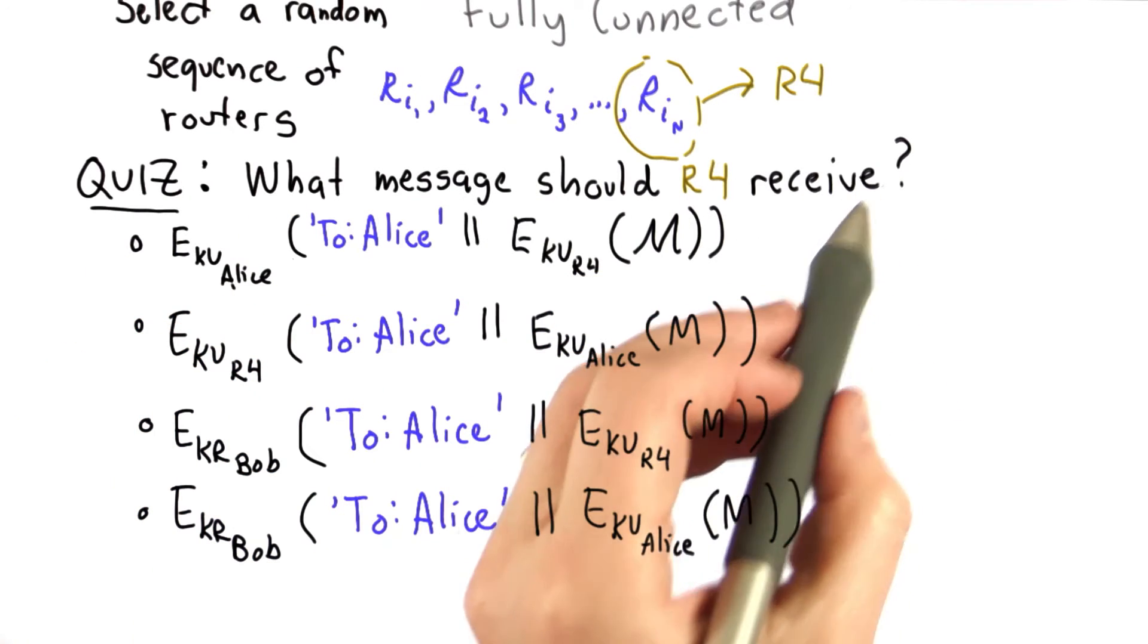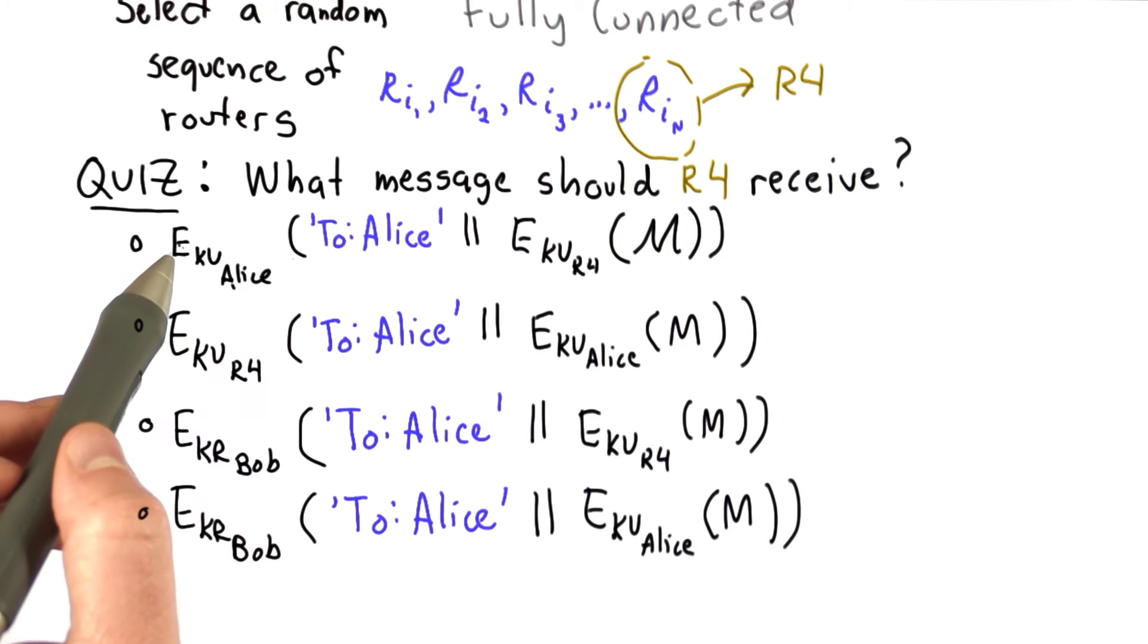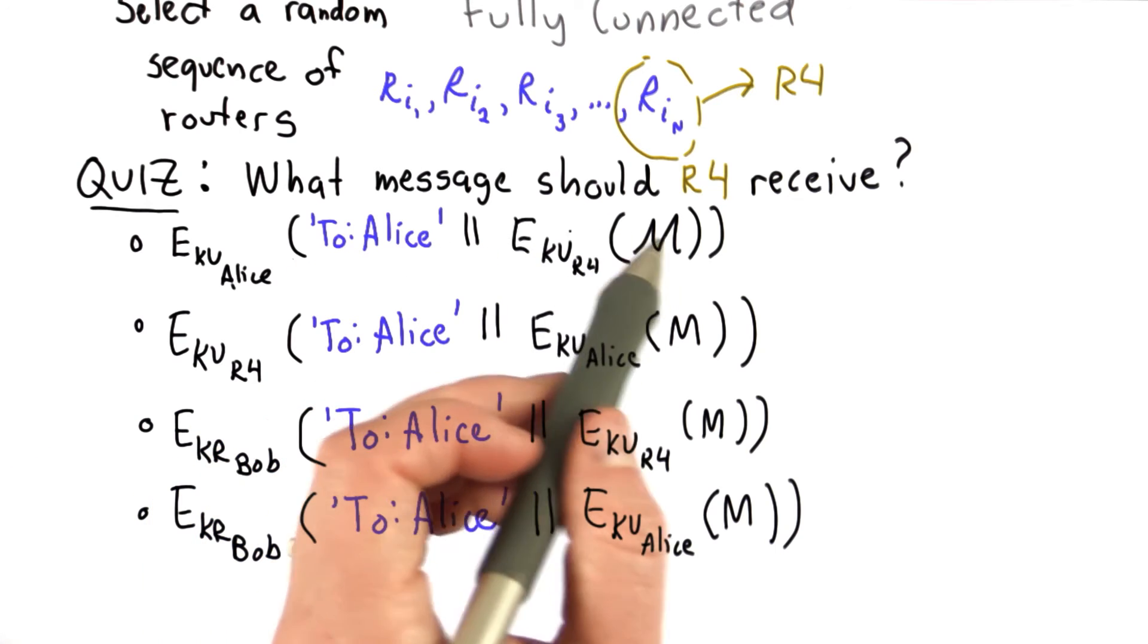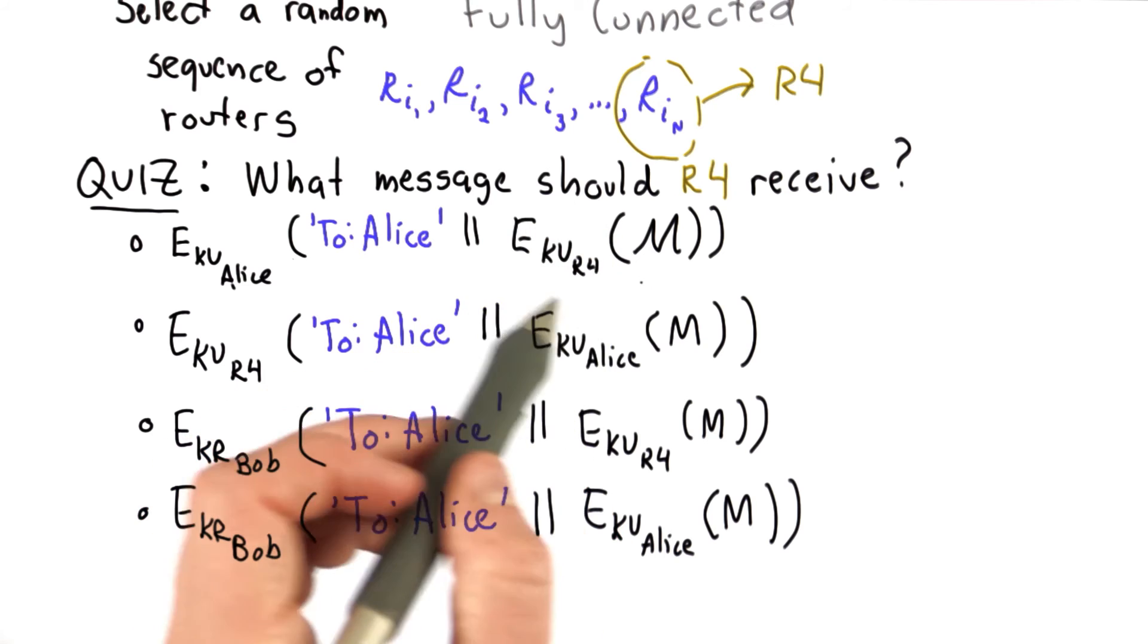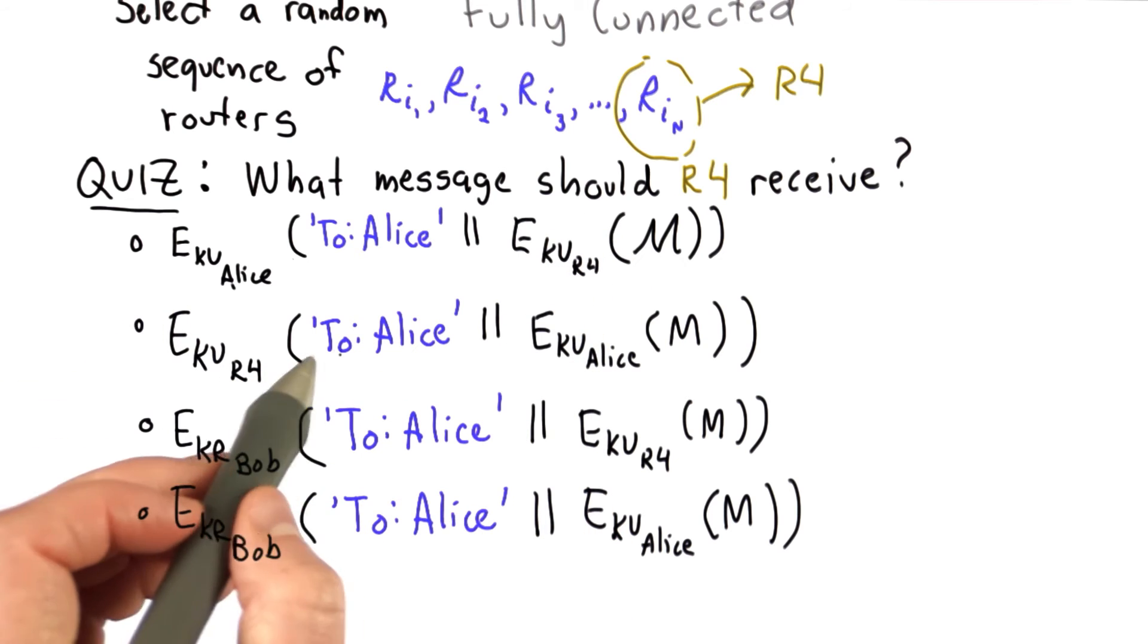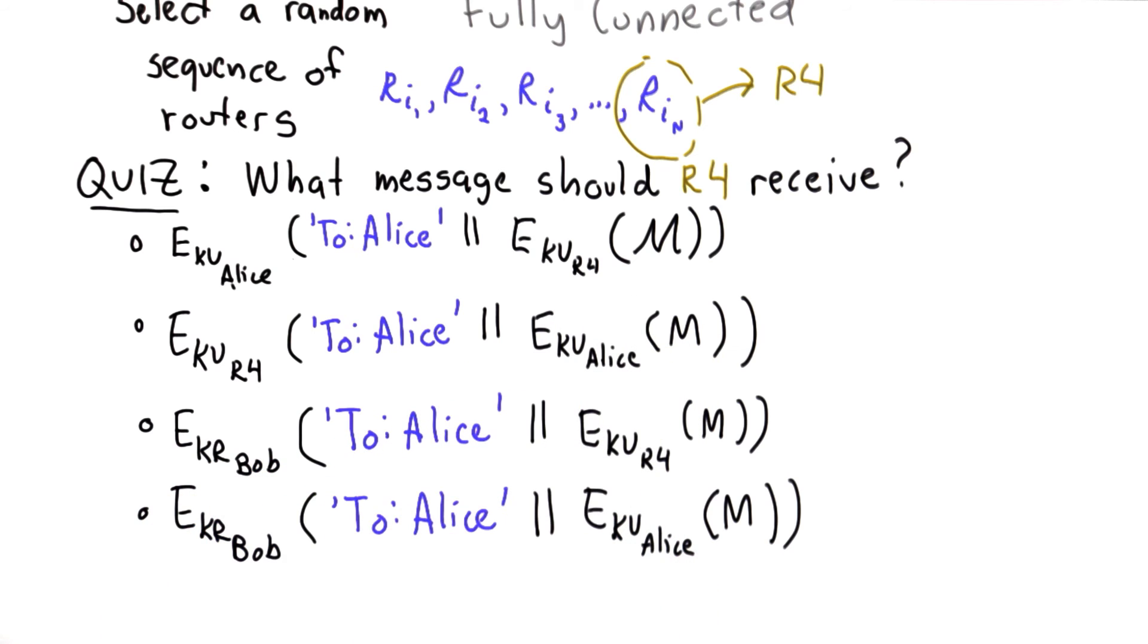The question is what message should R4 receive? The answers are encrypted with Alice's public key, the message to Alice in clear, concatenated with the message, this is the message Dave wants to send to Alice, encrypted using the public key of R4. Encrypted using the public key of R4, the message to Alice, concatenated with the message encrypted with Alice's public key.